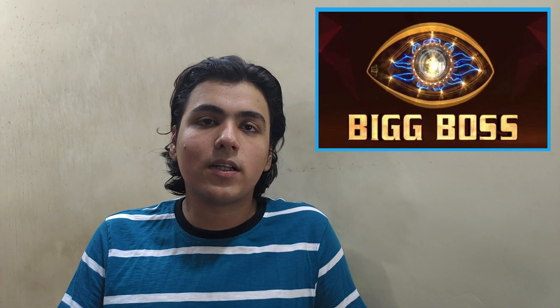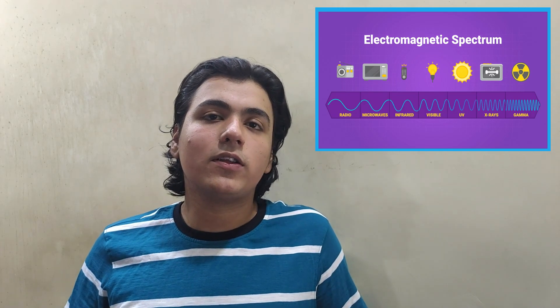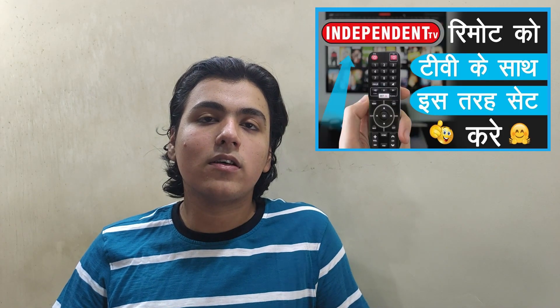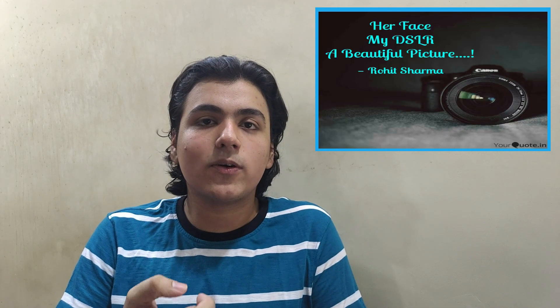Infrared rays are invisible to the human eye and they can be used in the technology around us without disrupting the visible world around us. An example of this would be your TV remote. A TV remote emits infrared rays and it is not visible to us. But if you want to check if your TV remote works, you can just point your phone camera towards the light at the end of your TV remote and press any button on the remote.